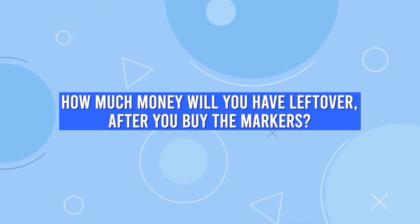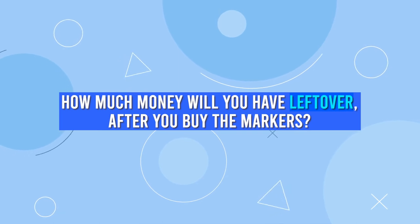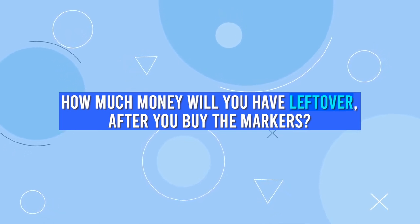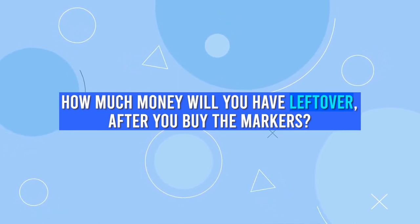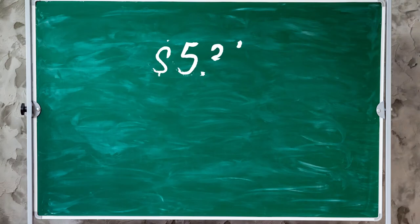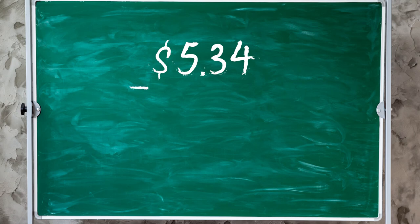First, look for the key word in the money word problem to find out if this equation is asking you to add or subtract. This time, you will be subtracting, right? Next, we need to line up the numbers. Always put the bigger number or amount on top and the lesser amount underneath.